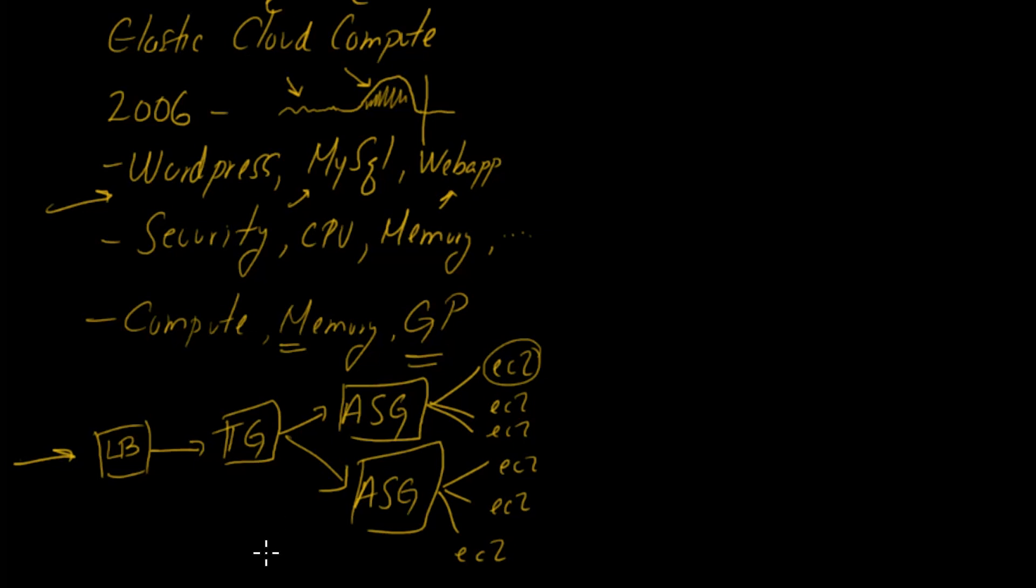So this is kind of complicated, right? Like this isn't easy to understand. In order to set this up, you need to know how load balancers work, target groups work, ASGs, availability zones, EC2s, security groups - the list goes on. It's ridiculous, the number of things that you need to know.